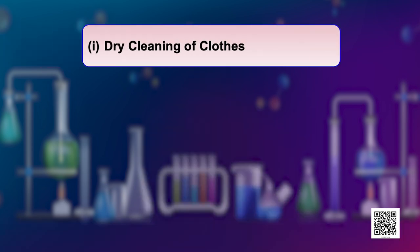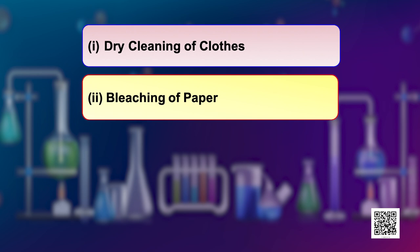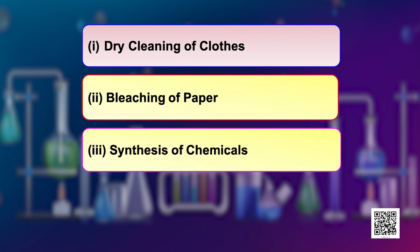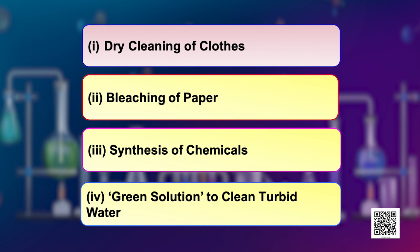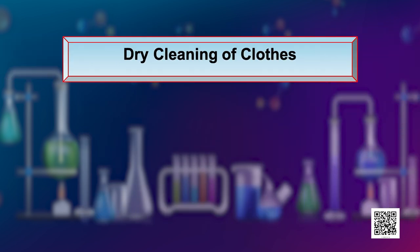Let us see the use of green chemistry in day-to-day life. There are certain interesting case studies and we will be explaining some selected ones. First is dry cleaning of clothes. Second is bleaching of paper. Third is synthesis of chemicals. Fourth is green solution to clean turbid water. Starting with the dry cleaning of clothes.